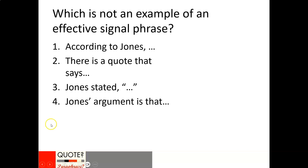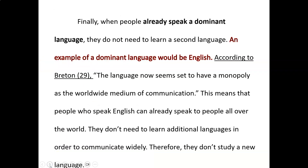Hopefully you identified that number two is not a good signal phrase. Saying 'there is a quote that says' is very awkward. We want to be more professional and academic by using the other signal phrases instead. For example, here you can see the signal phrase 'according to Breton' followed by the parenthetical page number (29).